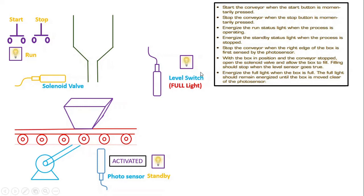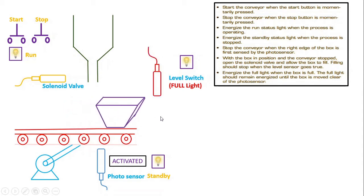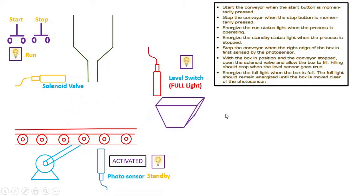Energize the full light — the full light is essentially for the level sensor when the box is full. Once the box is full, the light should turn on for the level switch, and this full light should continuously be energized until the box is moved out of this zone, and then the light will turn off. So this is how we read the problem statement. Now, how do we draw the ladder diagram for that?